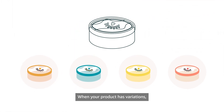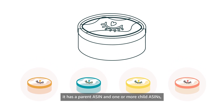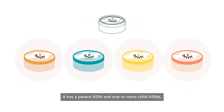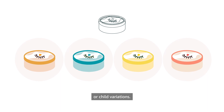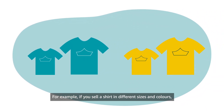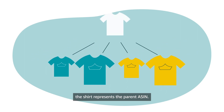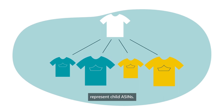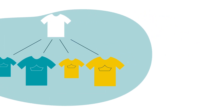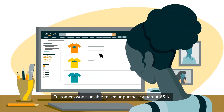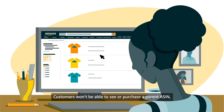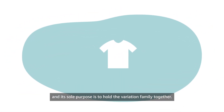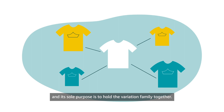When your product has variations, it has a parent ASIN and one or more child ASINs or child variations. For example, if you sell a shirt in different sizes and colours, the shirt represents the parent ASIN. The shirt's variations, such as blue and medium, represent child ASINs. Customers won't be able to see or purchase a parent ASIN — its sole purpose is to hold the variation family together.